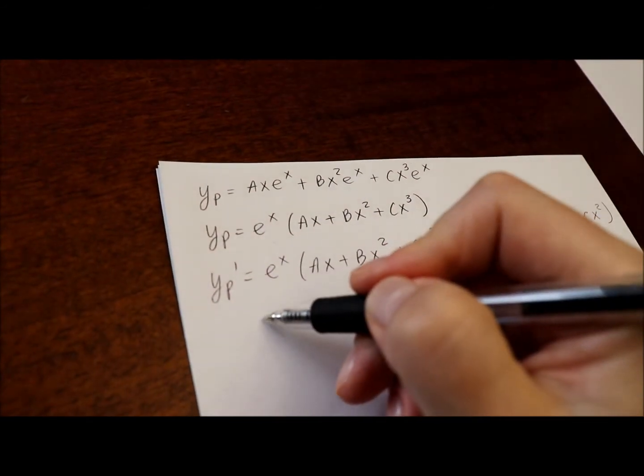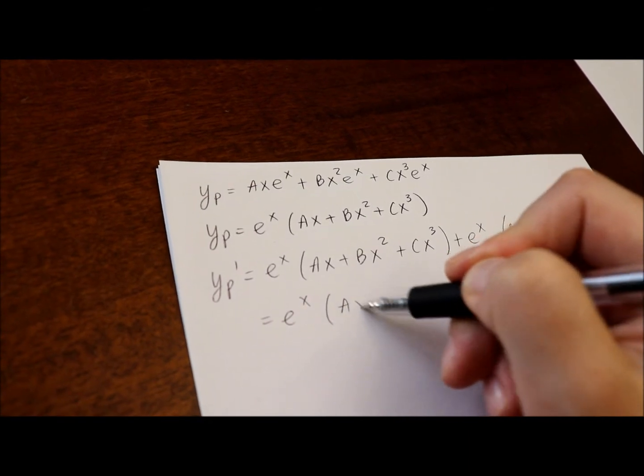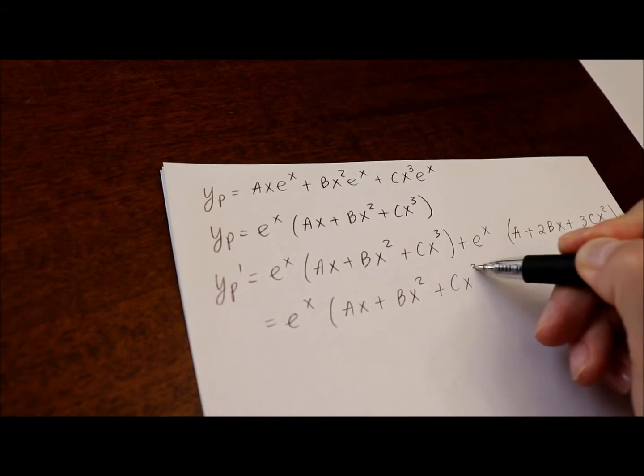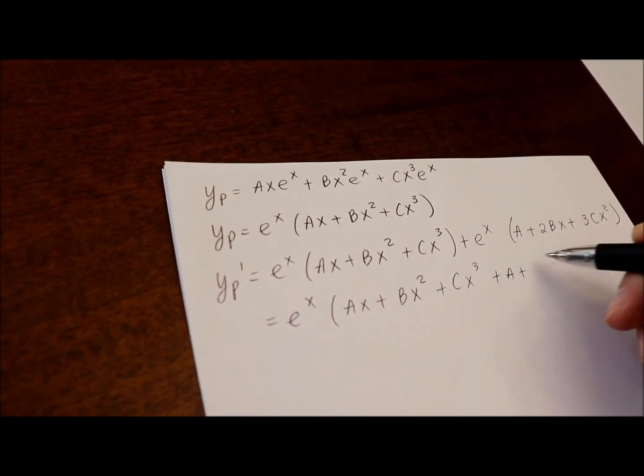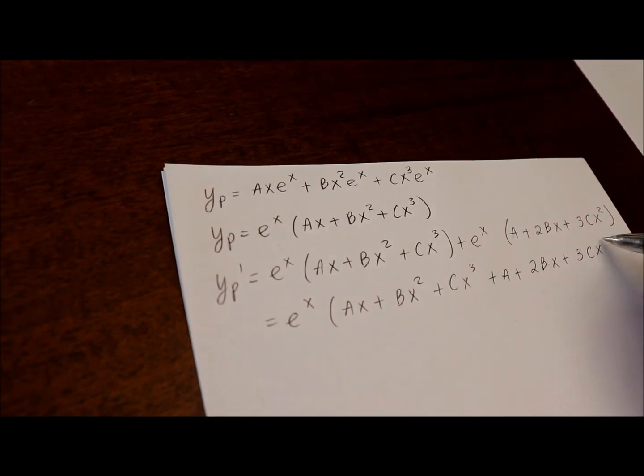And to simplify it, I will factor out e to the x. I get a x plus b x squared plus c x cubed plus a plus 2 b x plus 3 c x squared.